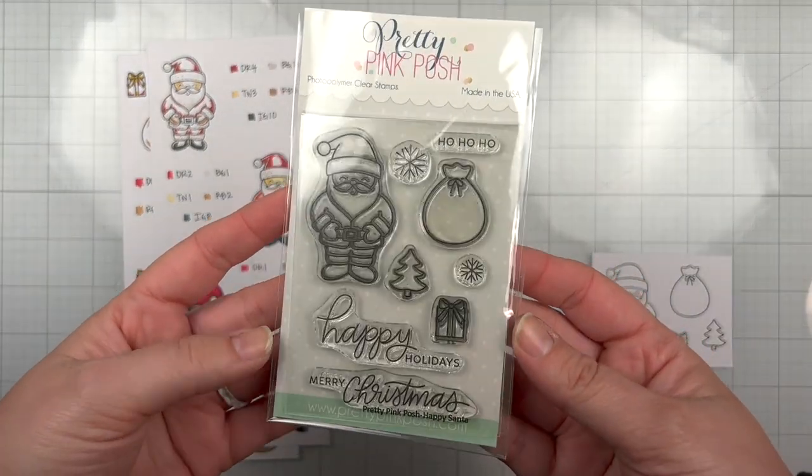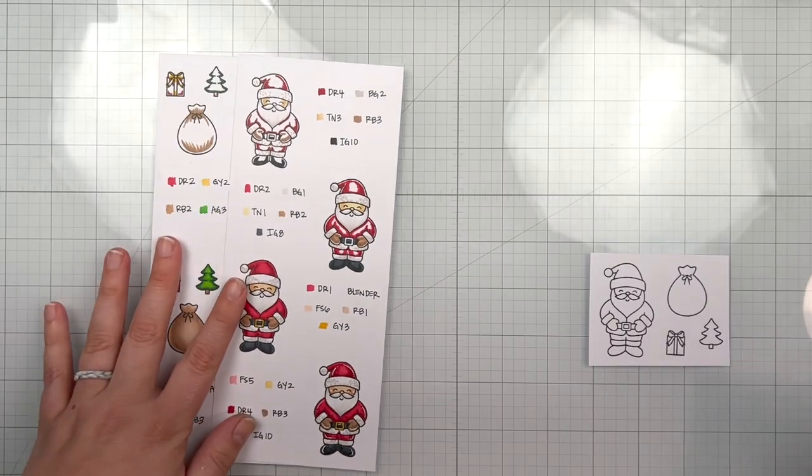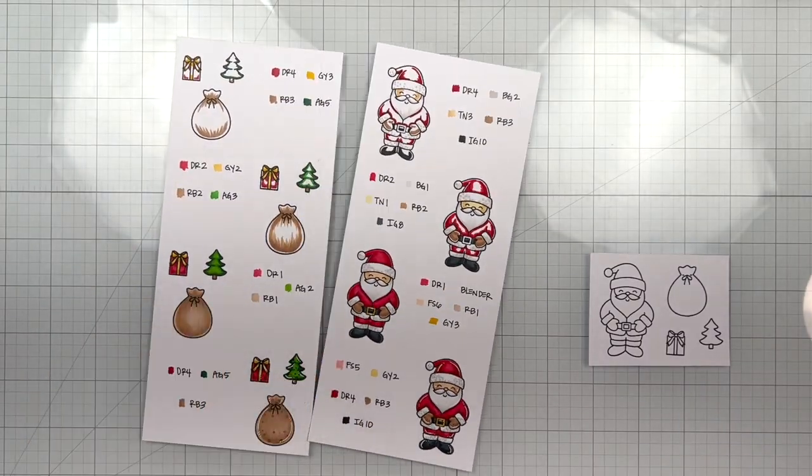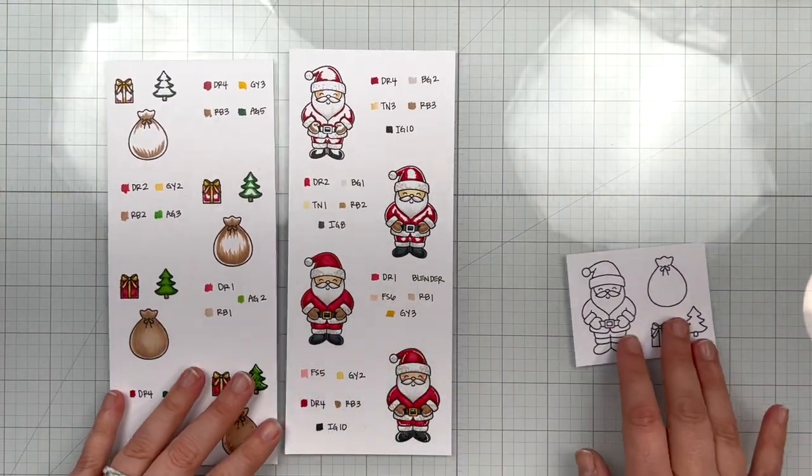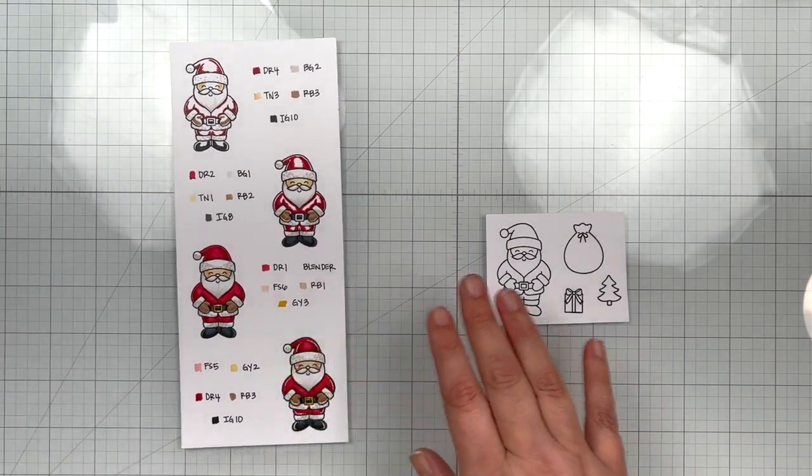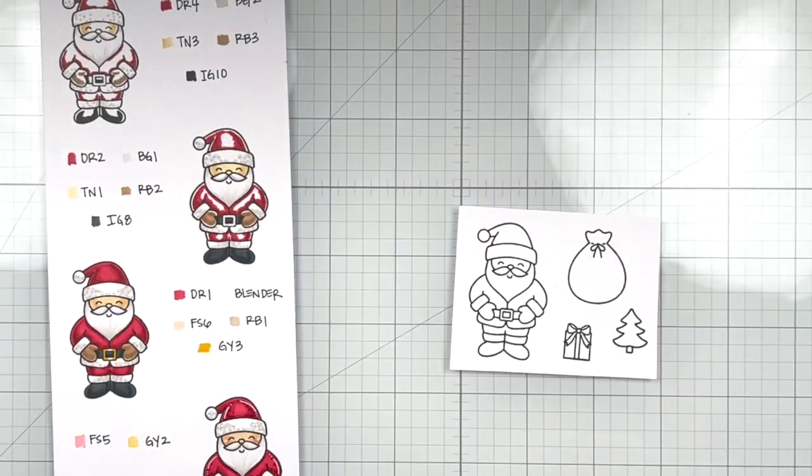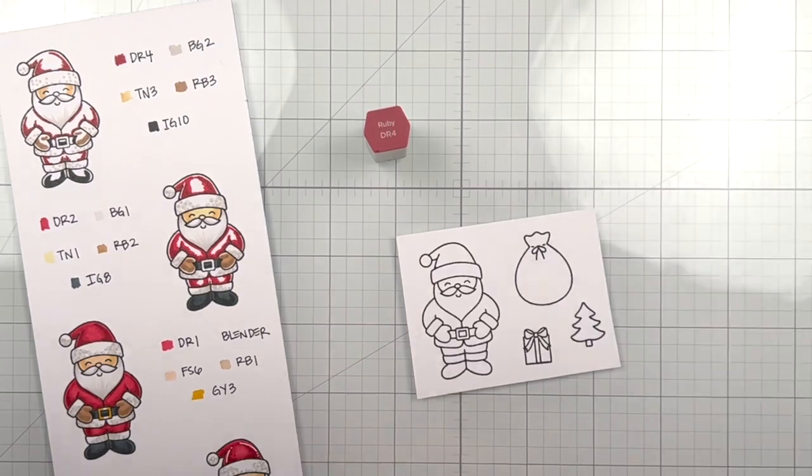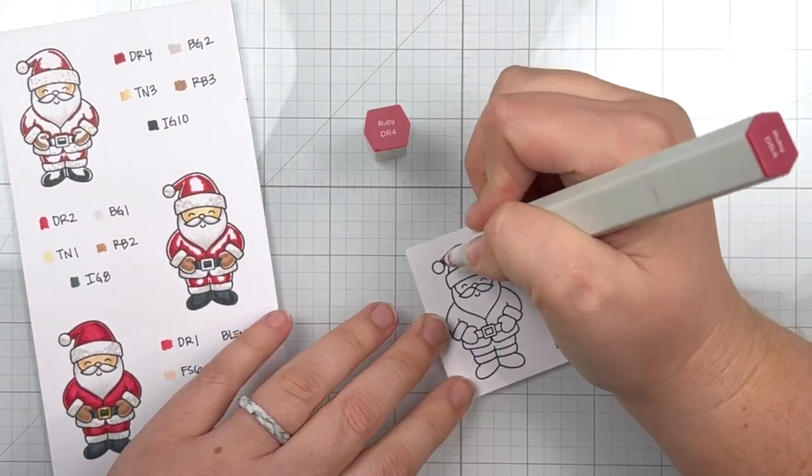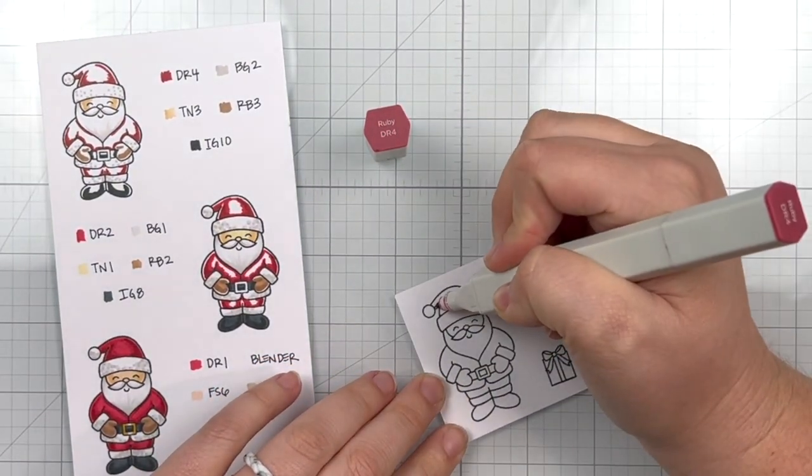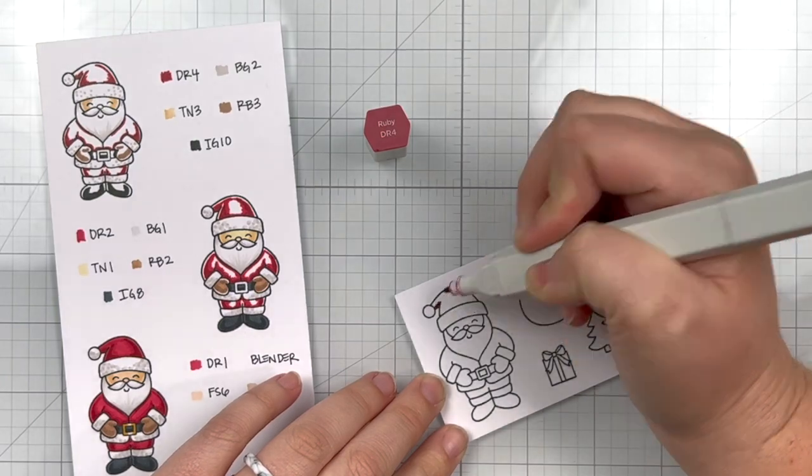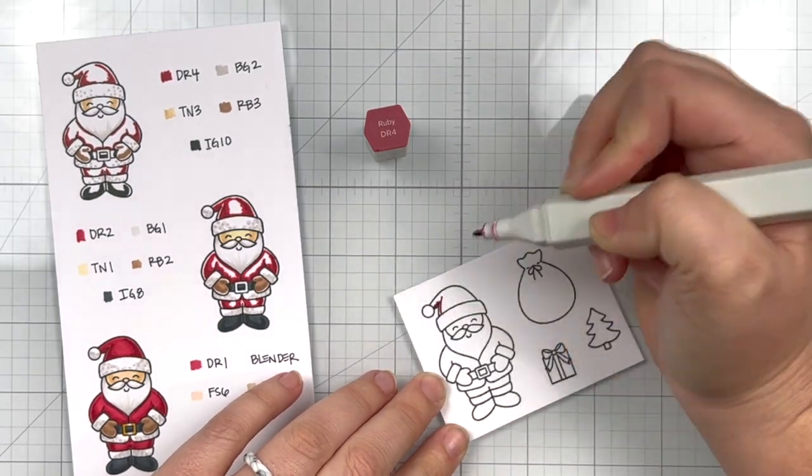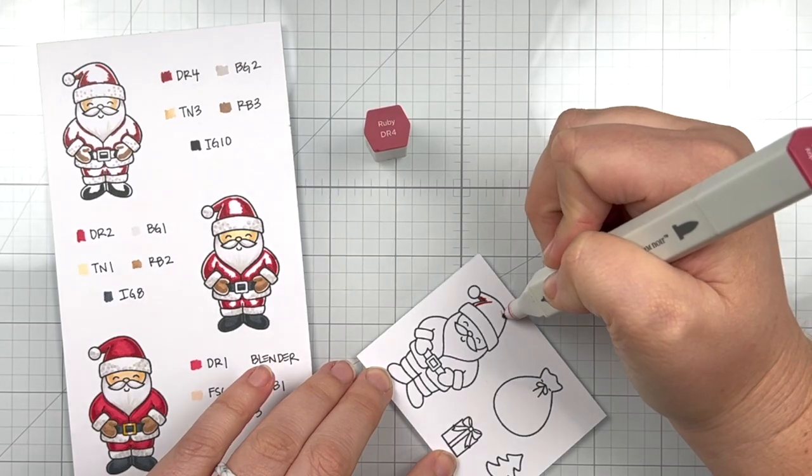I had a request in my Facebook group to do Santa because reds can be difficult. So these are the reds that I use from my Spectrum Noir Illustrator markers and I'm going to zoom in and get started on coloring. For my reds, I'm going to be using my DRs starting with 4 as my darkest and then moving into 2 and 1 as my medium and lighter tone.